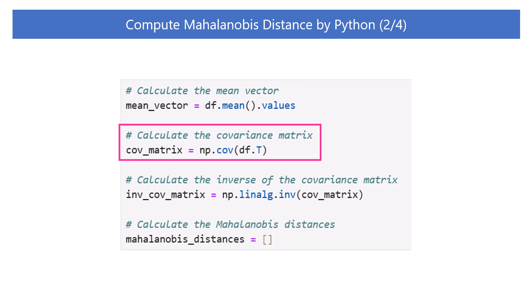Next, let's compute the covariance matrix. Use .T to transpose the dataframe. By taking the transpose, the data points will be placed in rows and the variables will be placed in columns. It enables np.cov to properly compute the covariance matrix. This operation is not related to the transposition of the mean vector we have seen in the formula, so do not confuse it with the transposition of the mean vector. Then, use the cov function in NumPy to compute the covariance matrix of the transposed data.